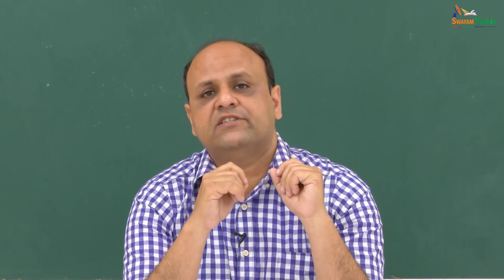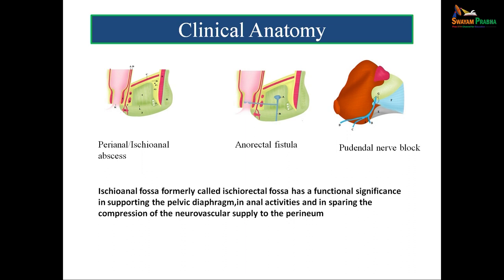Another important fact is that the fat in the ischioanal fossa may become lesser in amount, particularly in children who have diarrhea for a long duration of time. If this fat is not there, it has been observed that this leads to prolapse of the rectum in children. So another function attributed to the ischioanal fossa is that it provides stability and support to the rectum, and acts like a cushion - without which the rectum tends to protrude out through the anus, referred to as prolapse of the rectum.